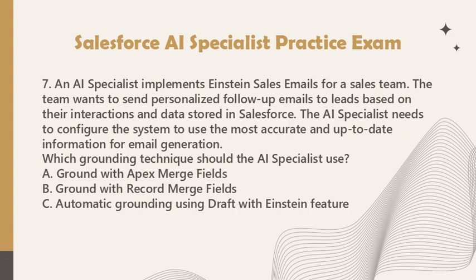Question 7: An AI specialist implements Einstein Sales Emails for a sales team. The team wants to send personalized follow-up emails to leads based on their interactions and data stored in Salesforce. The AI specialist needs to configure the system to use the most accurate and up-to-date information for email generation. Which grounding technique should the AI specialist use? A. Ground with Apex merge fields. B. Ground with Record merge fields. C. Automatic grounding using the Draft with Einstein feature.